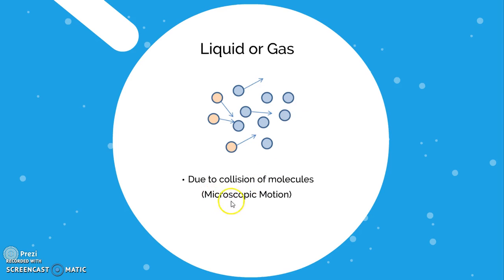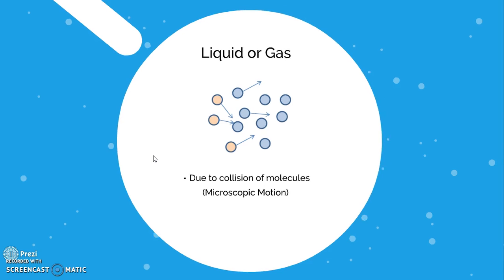This is how energy is transferred from high energy to low energy molecules through collisions in liquids or gases. Importantly, this is microscopic motion — you will not observe any visible movement of particles. When conduction occurs in a liquid or gas, there is no observable macroscopic movement.